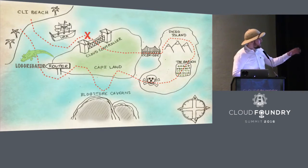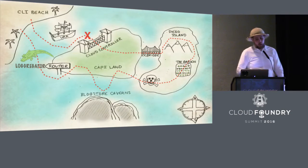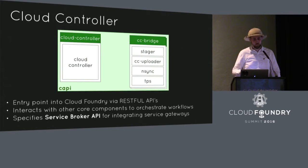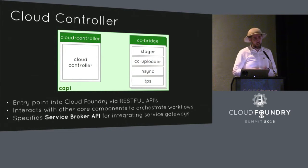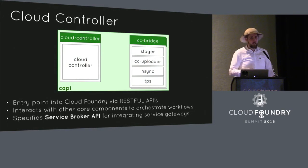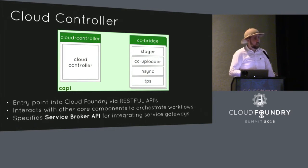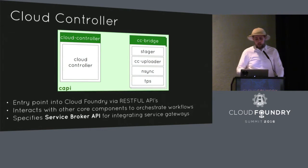We've gone past UAA and we're onto Cloud Controller, which is on Capiland. The Cloud Controller is the core entry point — it provides a set of RESTful APIs used by app developers and operators. There are a huge number of endpoints, and you can see this is going under a big rewrite at the moment, going to a v3 API. The Cloud Controller also interfaces with your external services, using a broker API specification to do this.